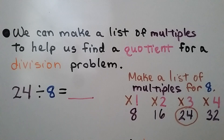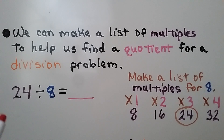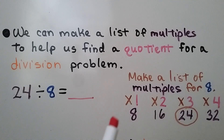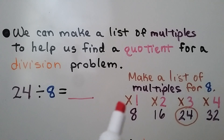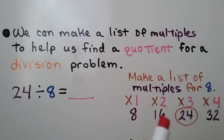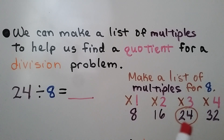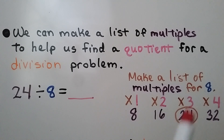We can make a list of multiples to help us find a quotient for a division problem. We need to find 24 divided by 8. We can make a list of multiples for 8: 1 times 8 is 8, 2 times 8 is 16, 3 times 8 is 24. There it is — so 24 divided by 8 is 3.